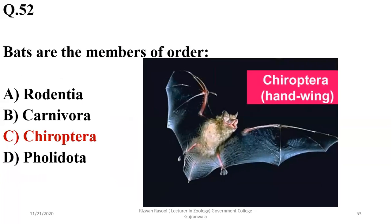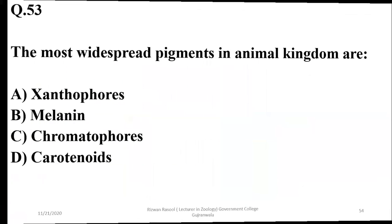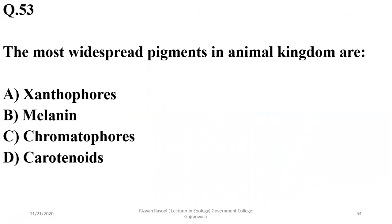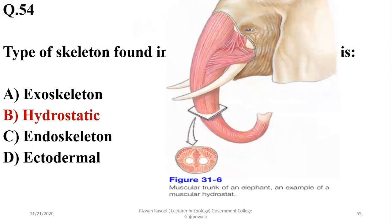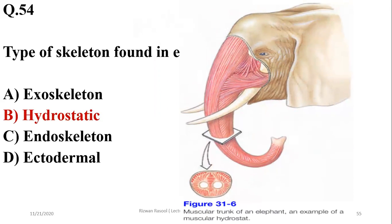The most widespread pigments in the animal kingdom are actually melanin pigments, so B is the right option. The type of skeleton which is found in the elephant's muscular trunk — whether exo, hydro, endo, or ectodermal — it is actually the hydrostatic skeleton which is found in the muscular trunk of the elephant.